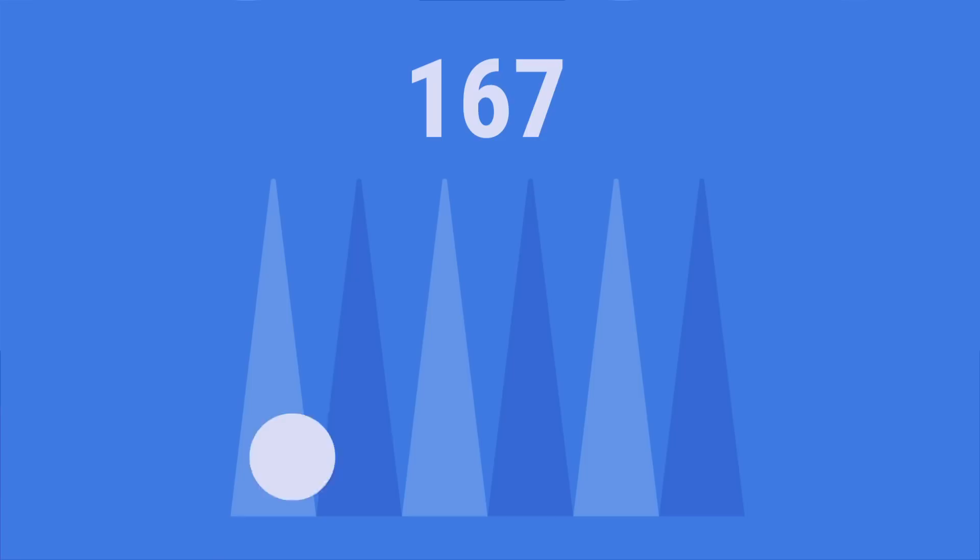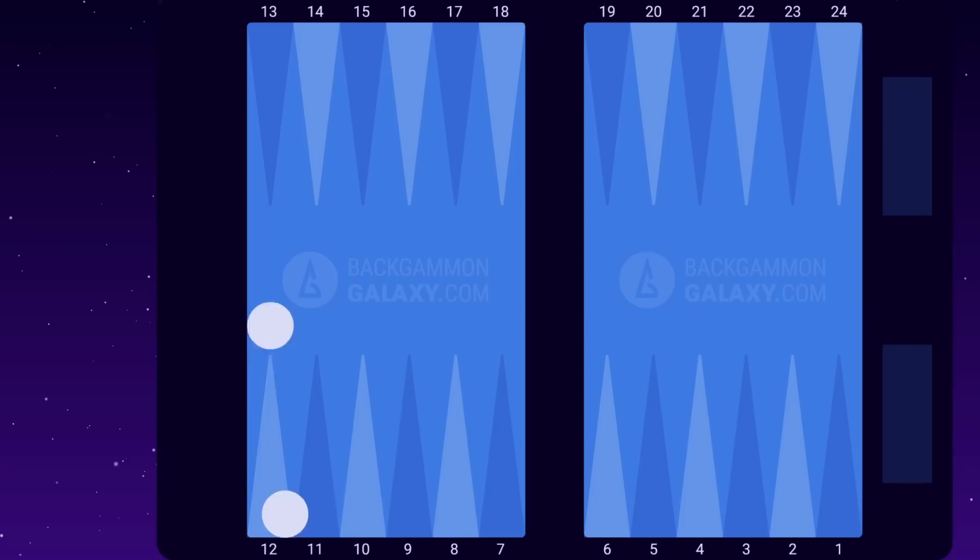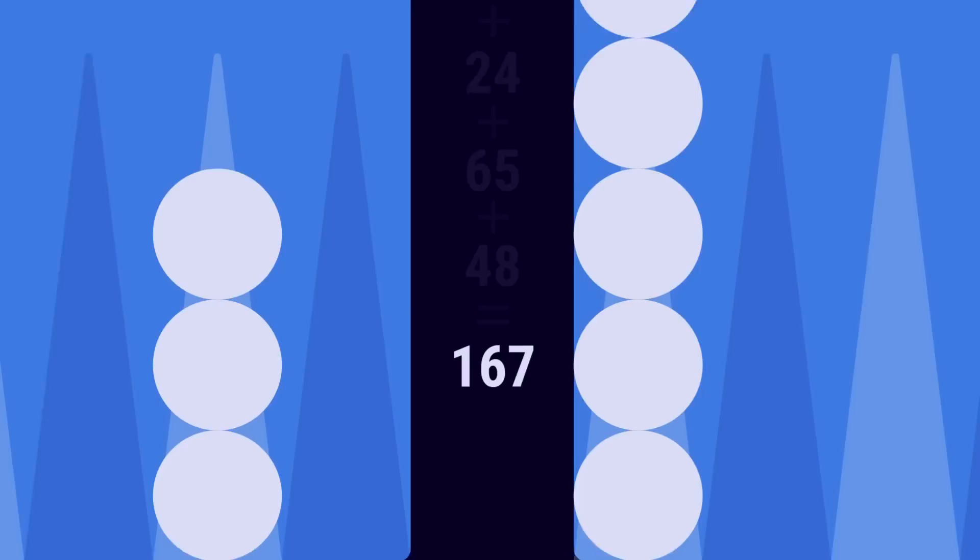2 checkers on a 24 point. Each checker on this point needs to move 24 pips to be borne off. 2 x 24 equals 48 pips. 5 checkers on 13. 5 x 13 equals 65 pips. 3 checkers on 8. 3 x 8 equals 24 pips. And 5 checkers on 6. 5 x 6 equals 30 pips. This makes the total of 167 pips.